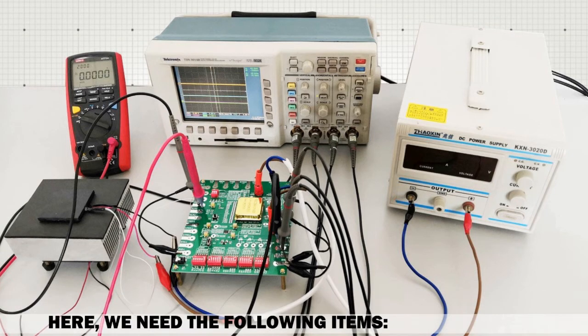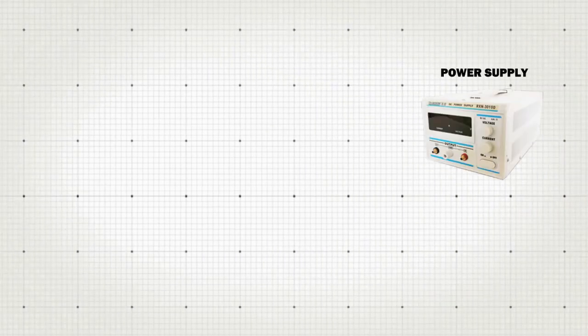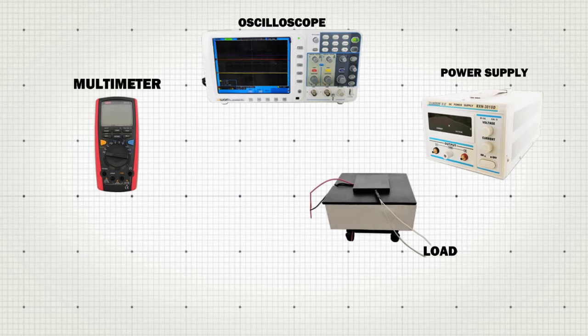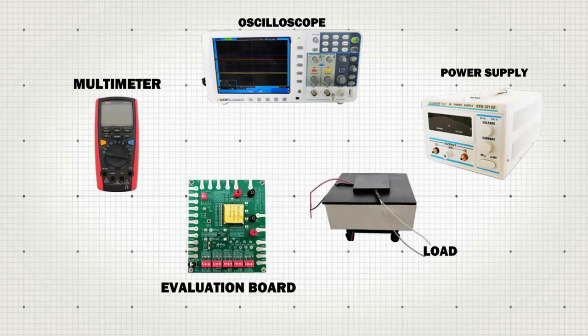Here we have the following items: power supply, oscilloscope, load, multimeter, TEC controller, and its evaluation board.